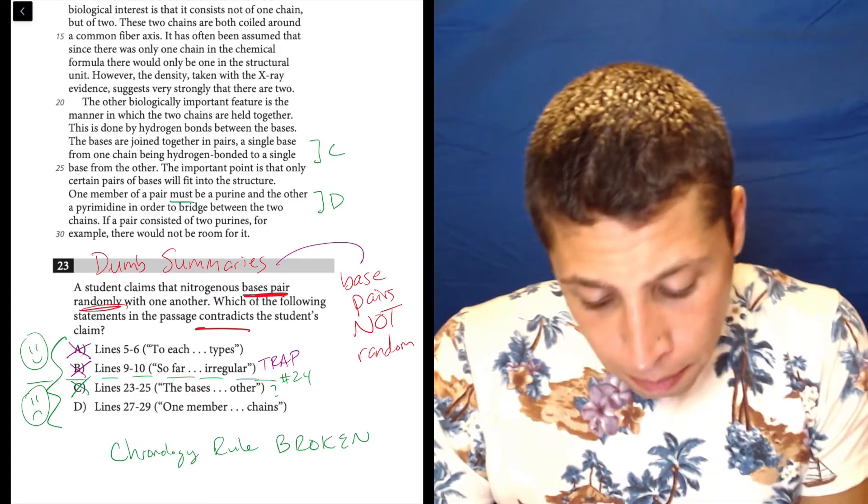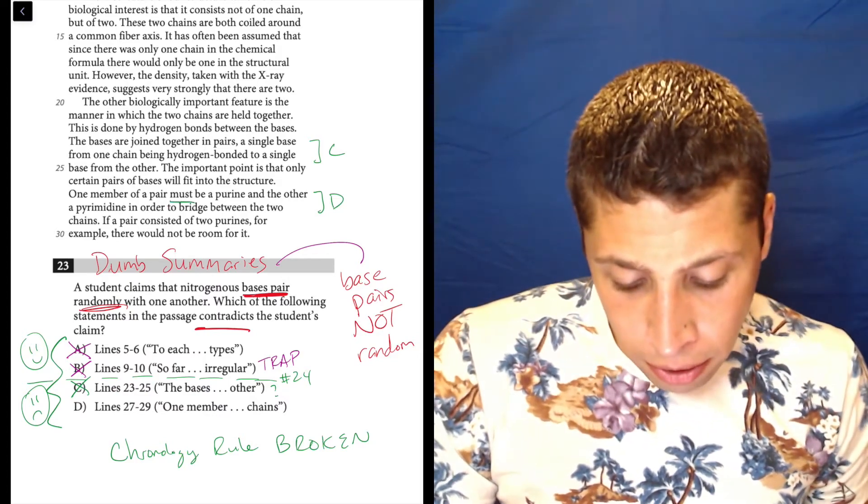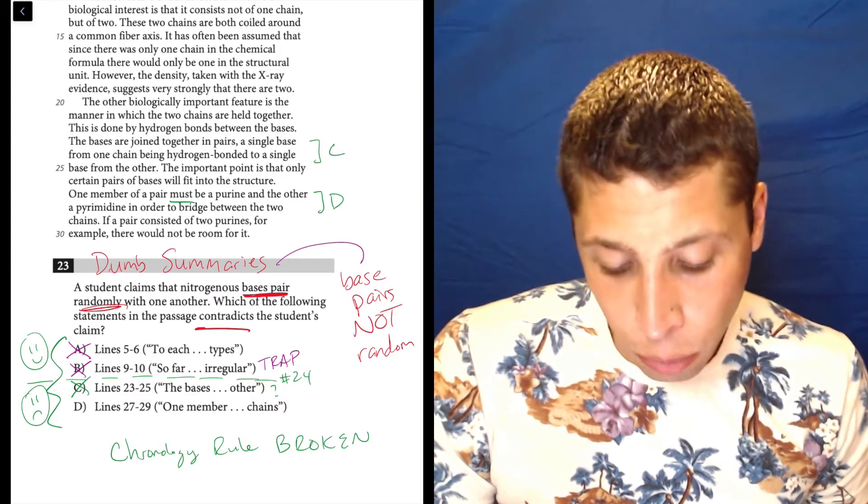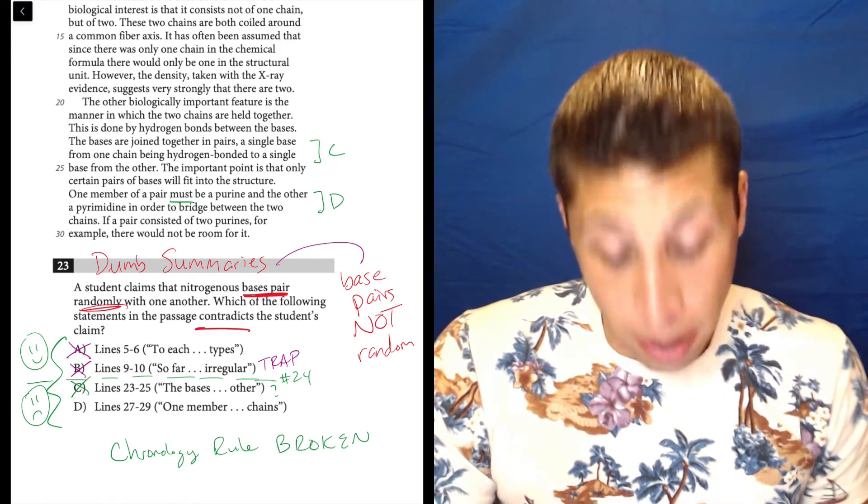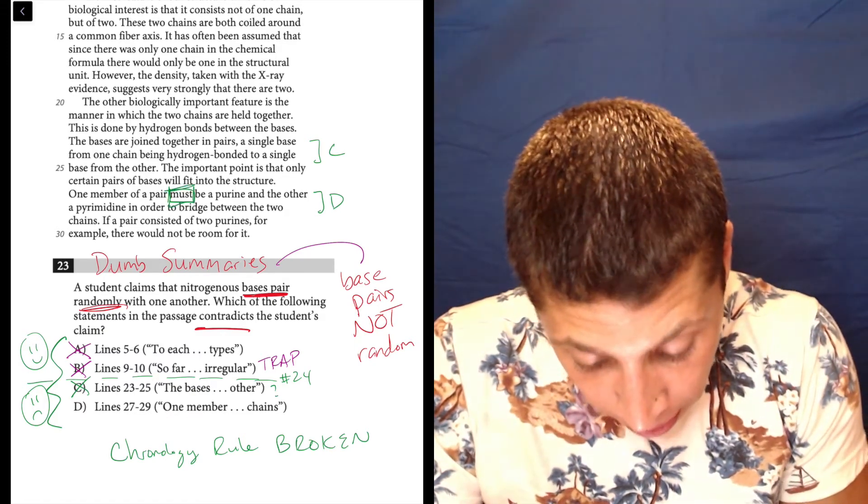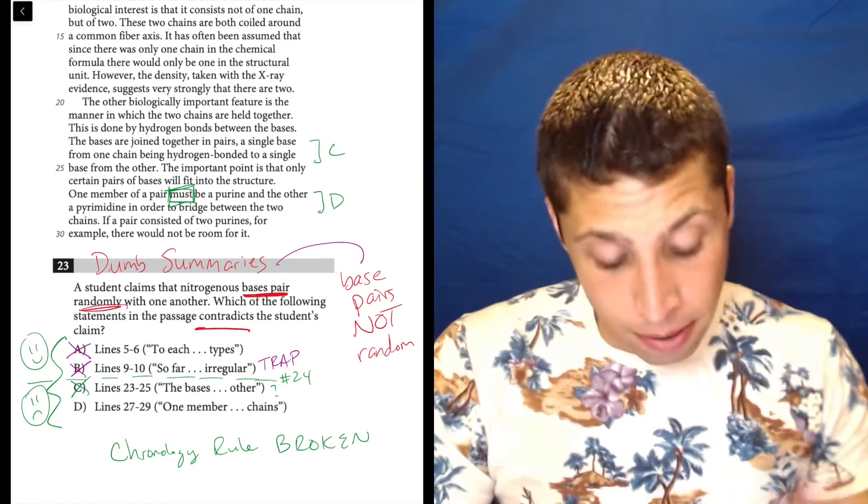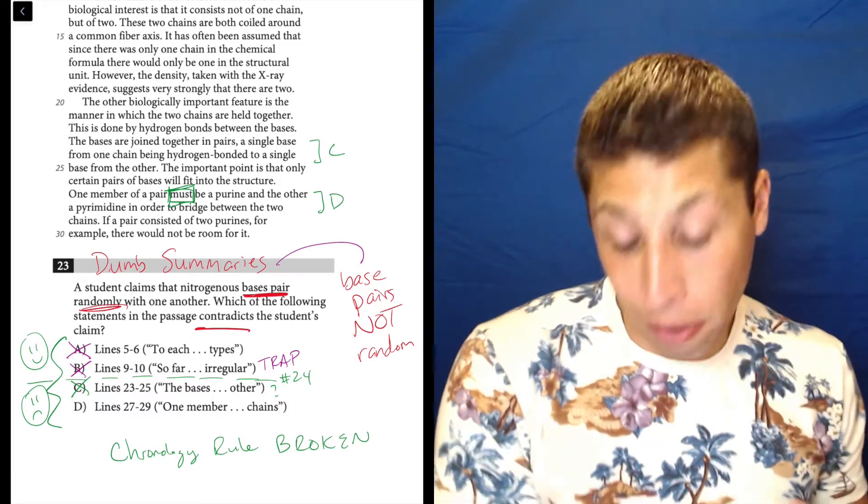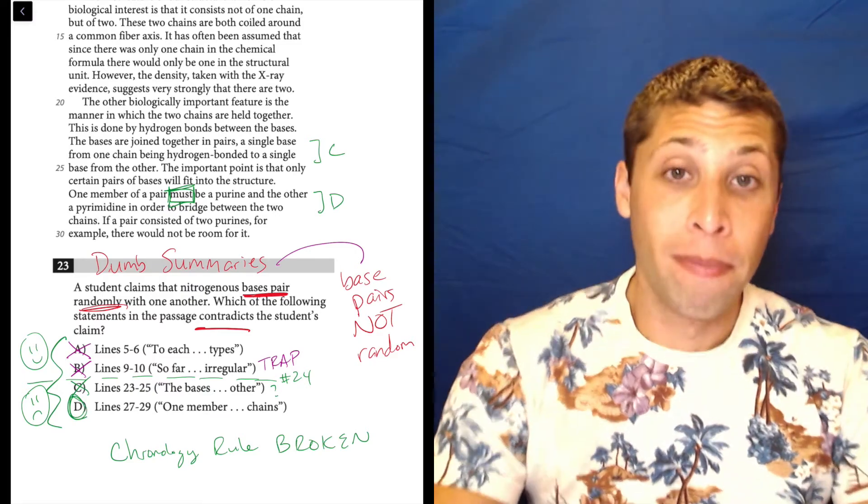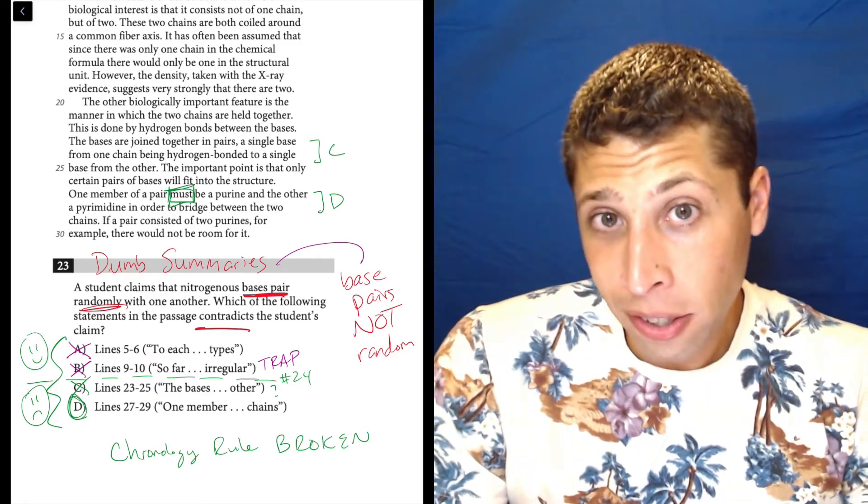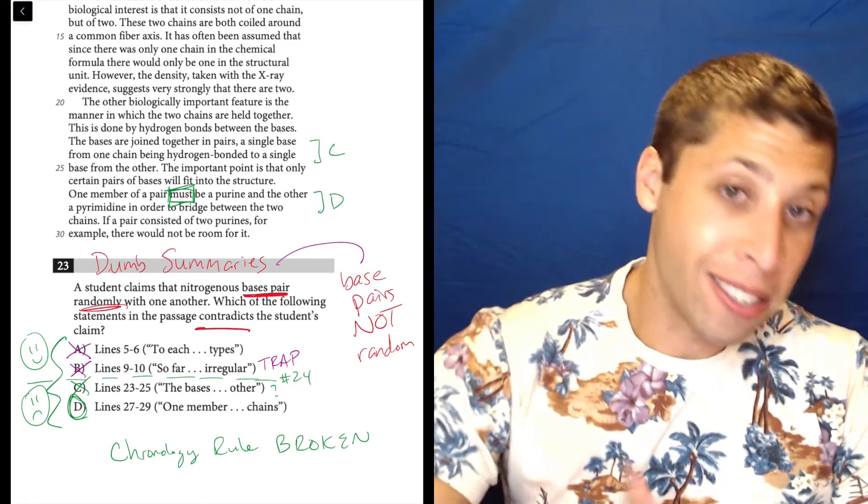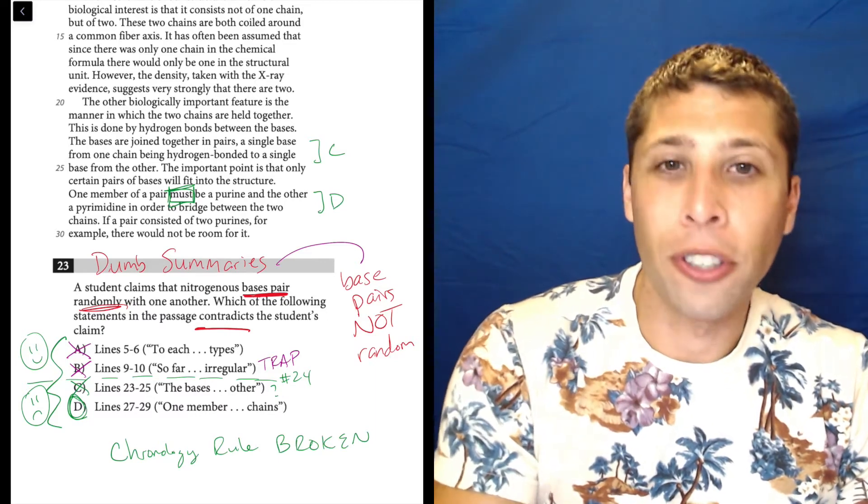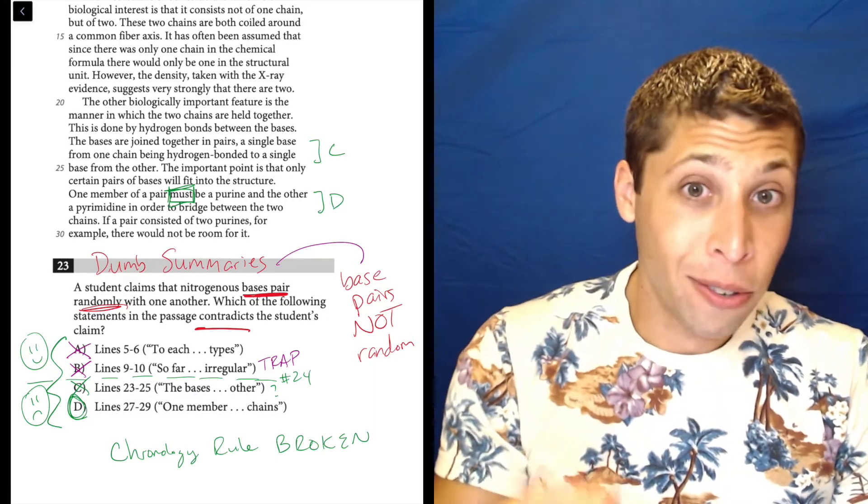One member of a pair must be a purine and the other a pyrimidine in order to bridge between the two chains. So that word must is doing a lot of work here telling us that it's not random because one thing must be with another thing. So there we go. And I think that that word must was easier to notice when we had summarized our question in a more understandable way.